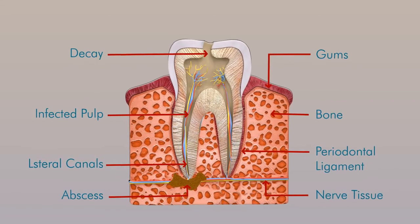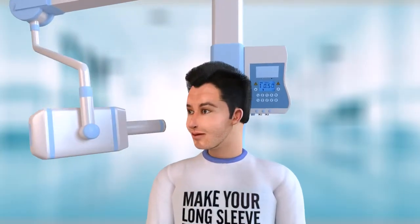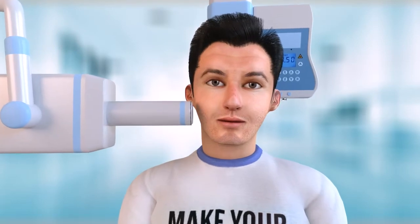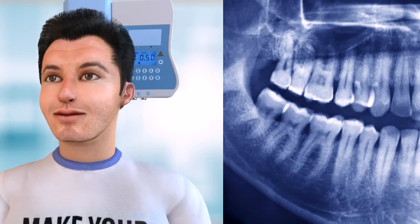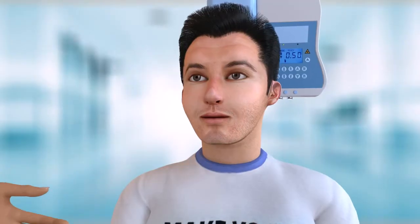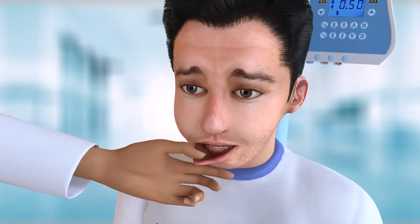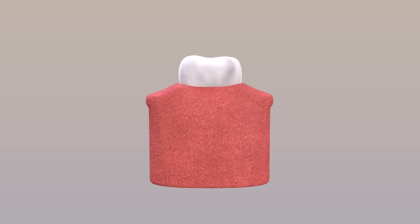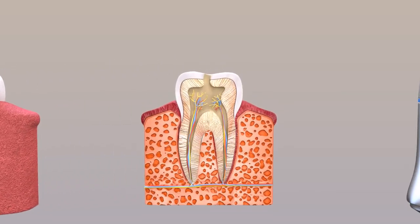The first approach towards RCT is taking an X-ray image of the infected tooth to locate the decay and infection. Next, the doctor administers local anesthesia to the affected area until the tooth gets numb.